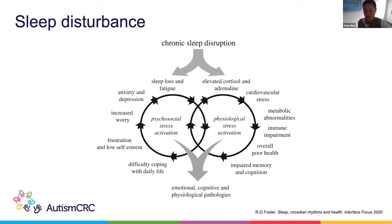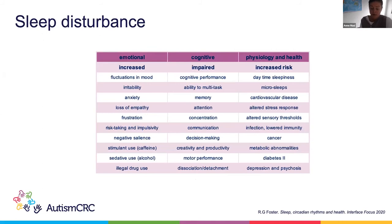Chronically elevated cortisol and adrenaline together drive a widespread stress response which initiates a number of processes, also detailed on the right-hand side of the figure. These include a release of glucose into the bloodstream, increase in heart rate and blood pressure, suppression of immune responses, slow indigestion, and reductions in memory consolidation and cognitive function. Subsequent sleep loss and fatigue then drives the psychosocial stresses identified on the left-hand side of the figure. These are caused by an imbalance between the demands placed on an individual and an inability to manage those demands as a result of reduced sleep. So we end up with combined and interlocking effects of physiological and psychosocial stresses leading to emotional, cognitive, and physiological pathologies detailed in this table.